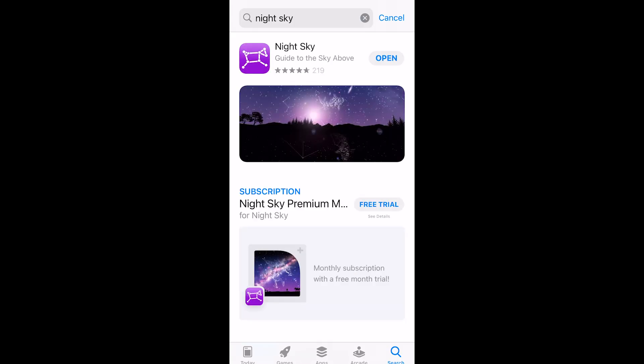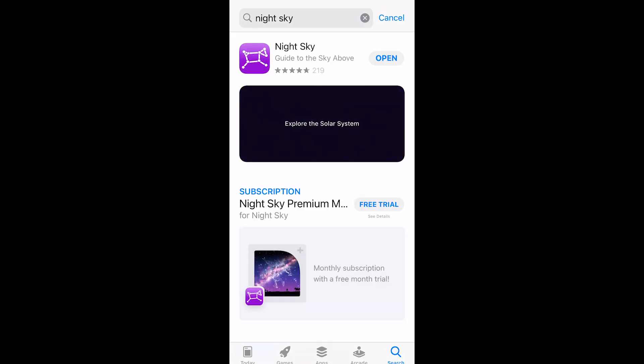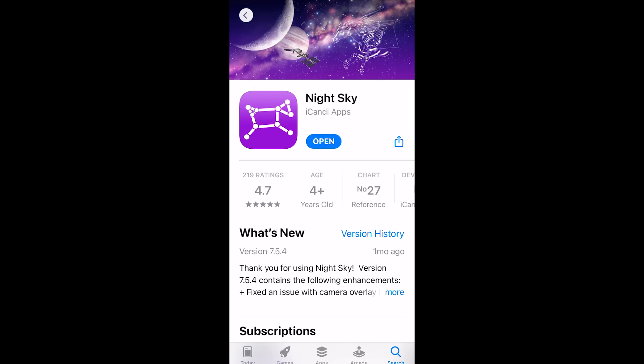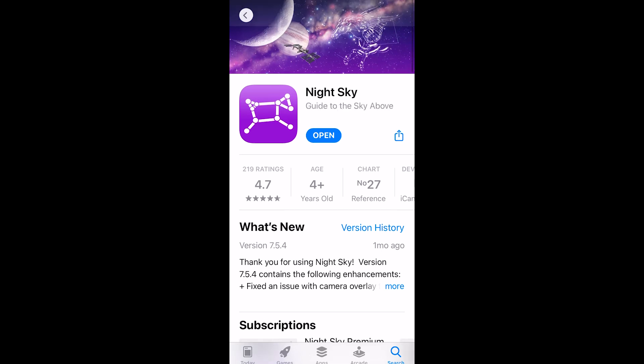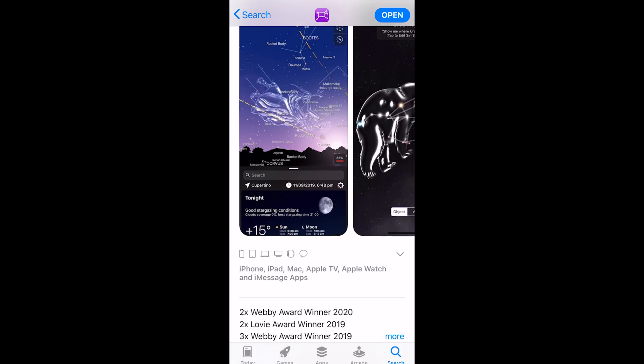So start up your iPhone and go to the App Store. Download the Night Sky App. It's a planetarium software which uses augmented reality to help you locate objects in the sky.